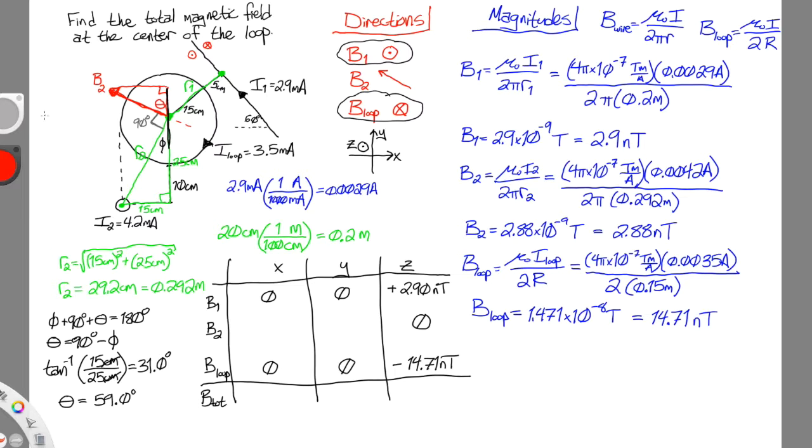I'll put the work up here for the components of B2. B2x will be the magnitude of B2, and the x component up here is the opposite component, so we want the sine of θ. And the x component of B2 points left, which is the negative x direction. B2y will also be the magnitude of B2, but this time times the cosine of θ because B2y is the adjacent component to that angle θ. B2y points upward, so this will be in the positive y direction. That gives us negative 2.47 nanotesla and positive 1.48 nanotesla for the y direction.